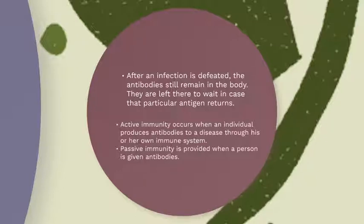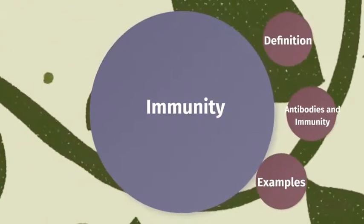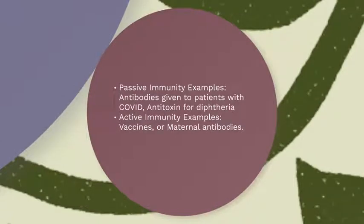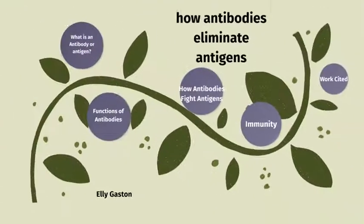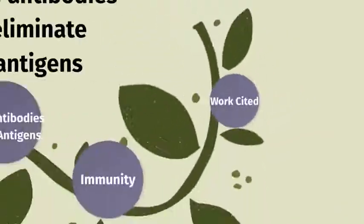Active immunity occurs when an individual produces antibodies for a disease through his or her own immune system. Passive immunity is provided when a person is given antibodies. Examples of passive immunity include antibodies given to patients with COVID, or the antitoxin given to patients with diphtheria before a vaccine was created. Active immunity examples include vaccines like the flu vaccine or maternal antibodies. Thank you so much for watching!